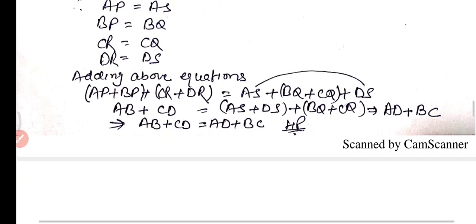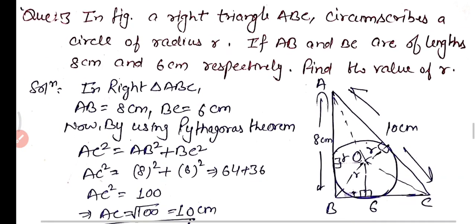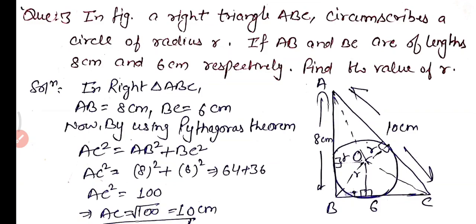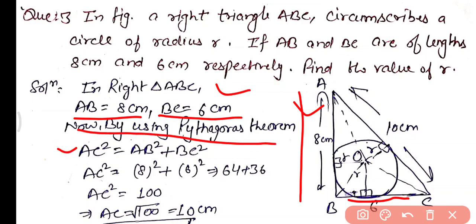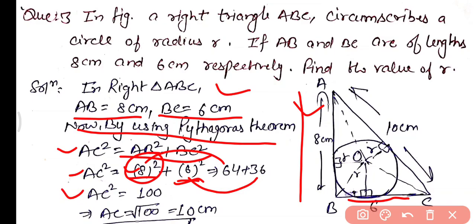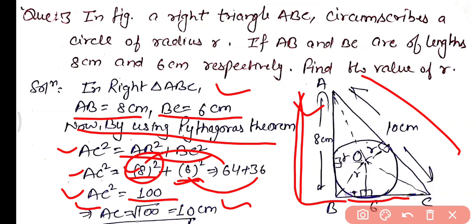Now question number three: in the figure, a right angle triangle ABC circumscribes a circle of radius r. If AB and BC are of length 8 cm and 6 cm respectively, find the value of r. In right angle triangle ABC: AB equals 8 cm, BC equals 6 cm. By Pythagoras theorem: AC squared equals AB squared plus BC squared equals 64 plus 36 equals 100. Therefore AC equals 10 cm.